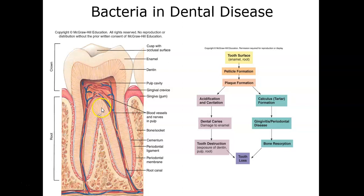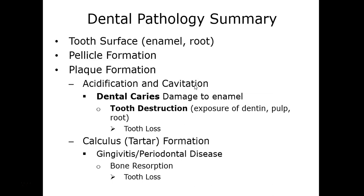Looking at the tooth structure, we have supporting structures including the gingiva — the pink layer or gum. Dental caries are actually the most common infectious diseases in humans. Bacteria utilize their fimbriae to attach and produce biofilms; these biofilm layers generate products over time that lead to tooth decay. That is why regular dental checkups to remove biofilms from the surface of the teeth are really important.